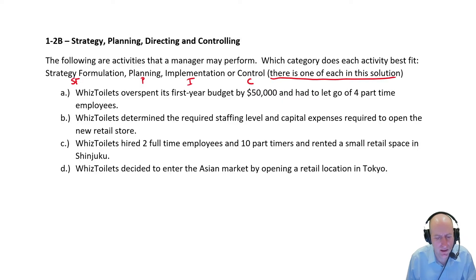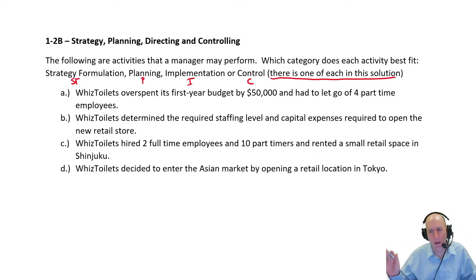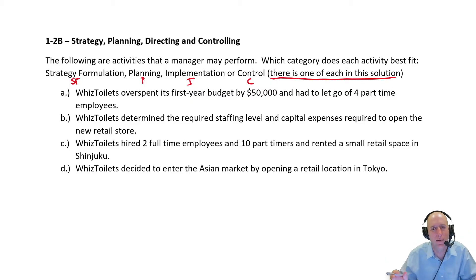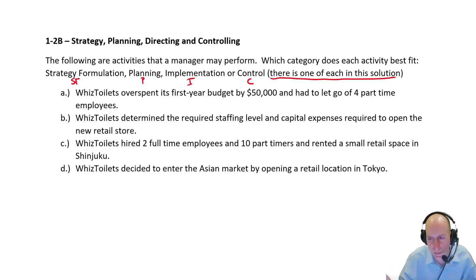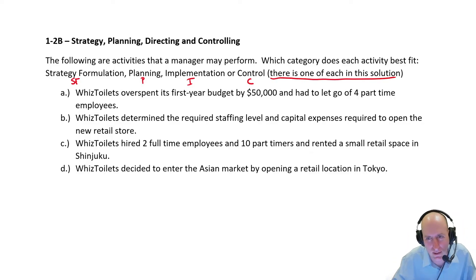A: Wiz Toilets overspent its first-year budget by $50,000 and had to let go of four part-time employees. I'm penciling in control here. This feels like a control activity because it's looking backwards — we've been working, we overspent a budget, and now we're adjusting because we let go of four people because of it.